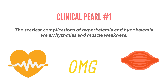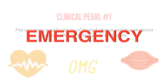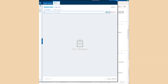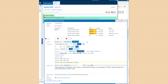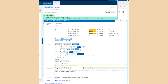For this reason, derangements in potassium concentration are considered emergencies, particularly hyperkalemia. So if you notice that your patient has hyperkalemia, you better be on it. In internal medicine, that means power walking to the nearest computer and putting in some orders. If you're wondering why we order insulin to treat hyperkalemia, check out the video on the treatment of hyperkalemia.